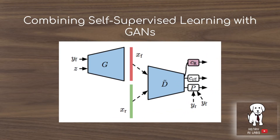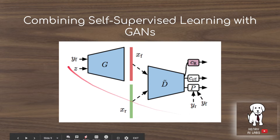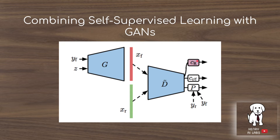Another idea, if you already have the Y labels, is to regularize the discriminator's features by requiring the discriminator to also predict the rotation loss. This is what is done in self-supervised GANs.